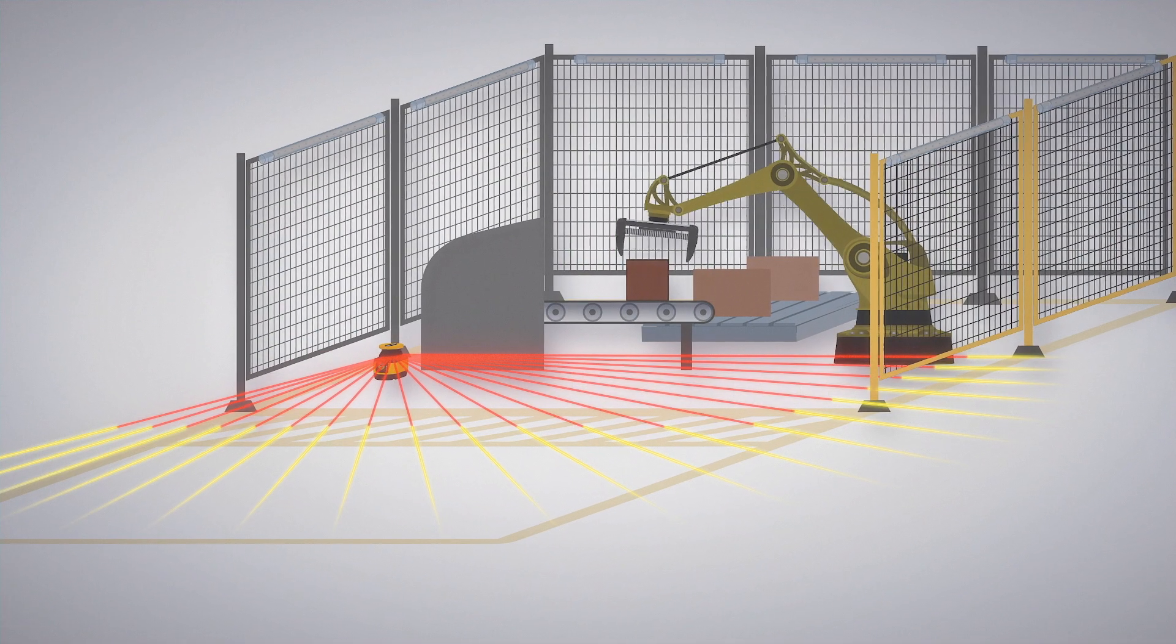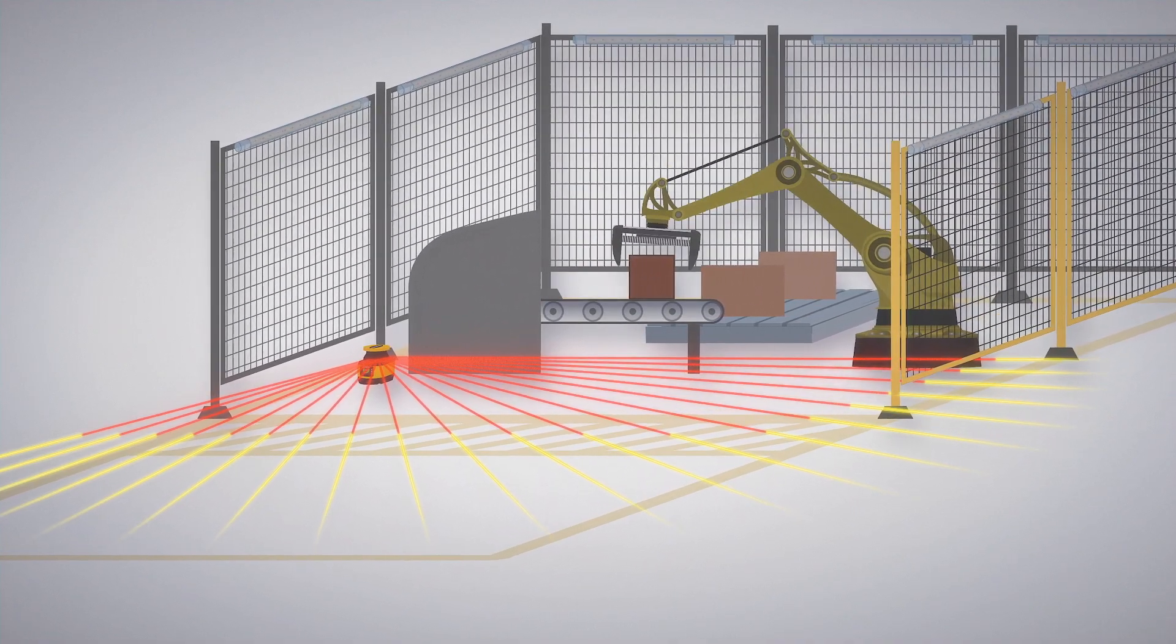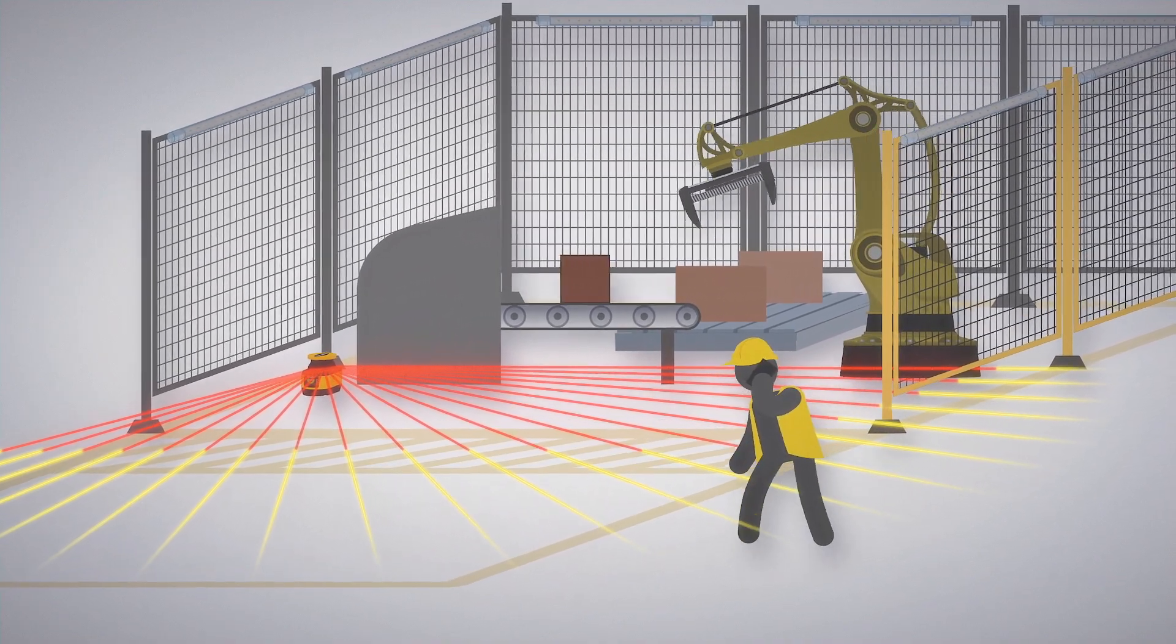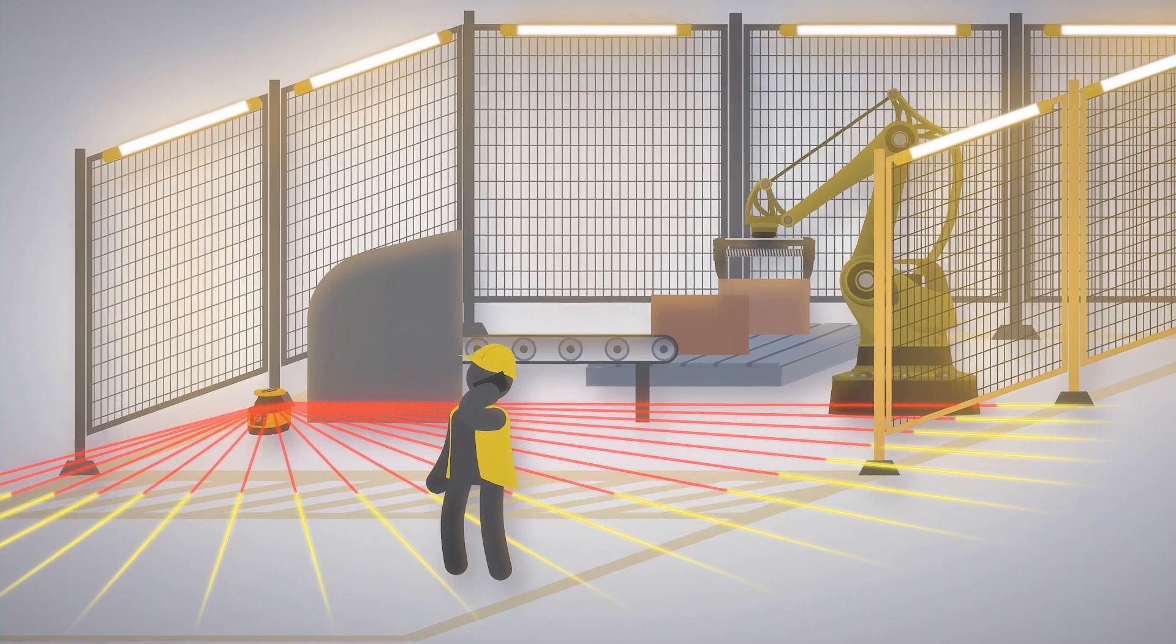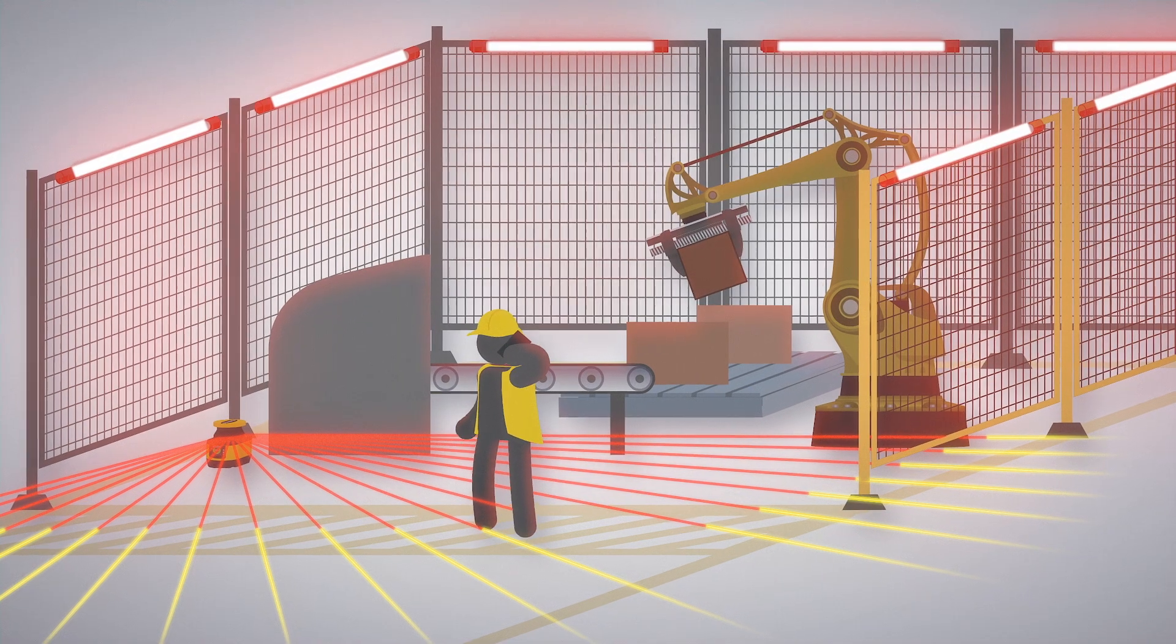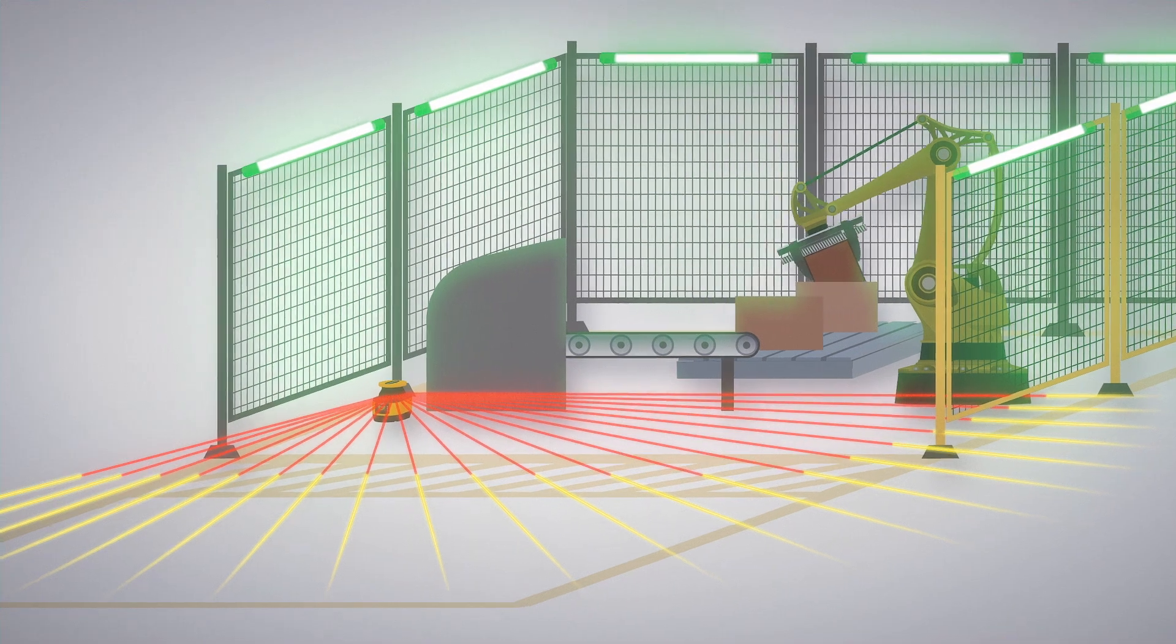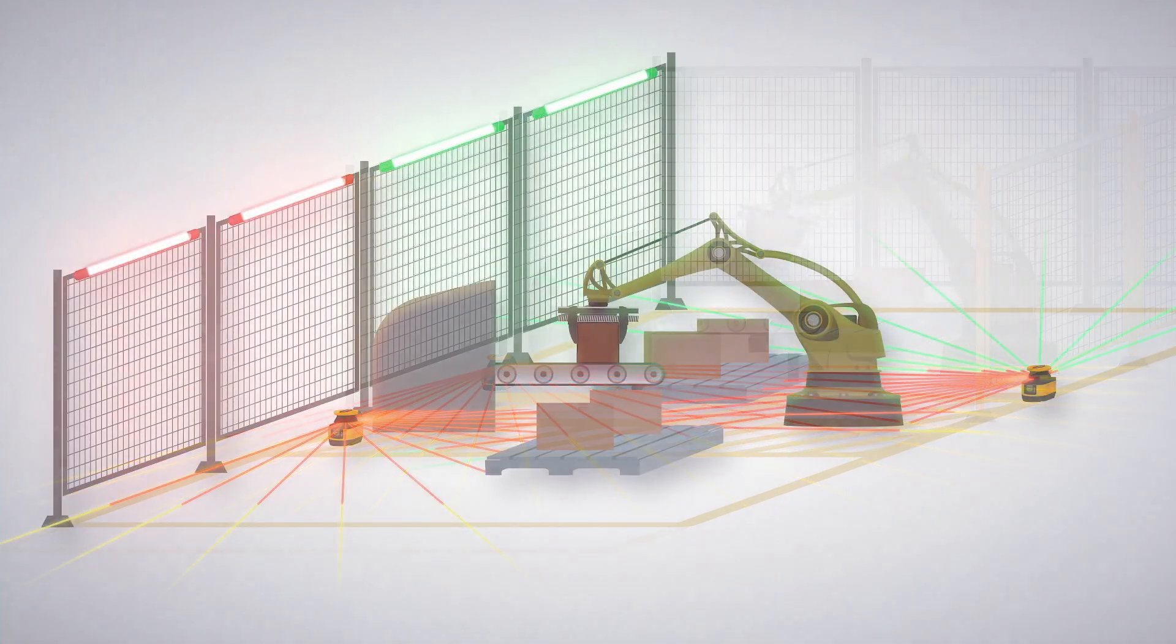Pair EasyStatus lights with safety equipment to intuitively communicate safety zones and conditions to workers. Here, an EasyStatus light alerts workers when they are entering an unsafe area. If a worker enters the laser scanner's warning zone, the light turns yellow. If the worker continues into the safety zone and causes an emergency shutdown, the light turns red. Blue light communicates that a reset is required, while a flash of green can indicate the system is back to normal operating condition.